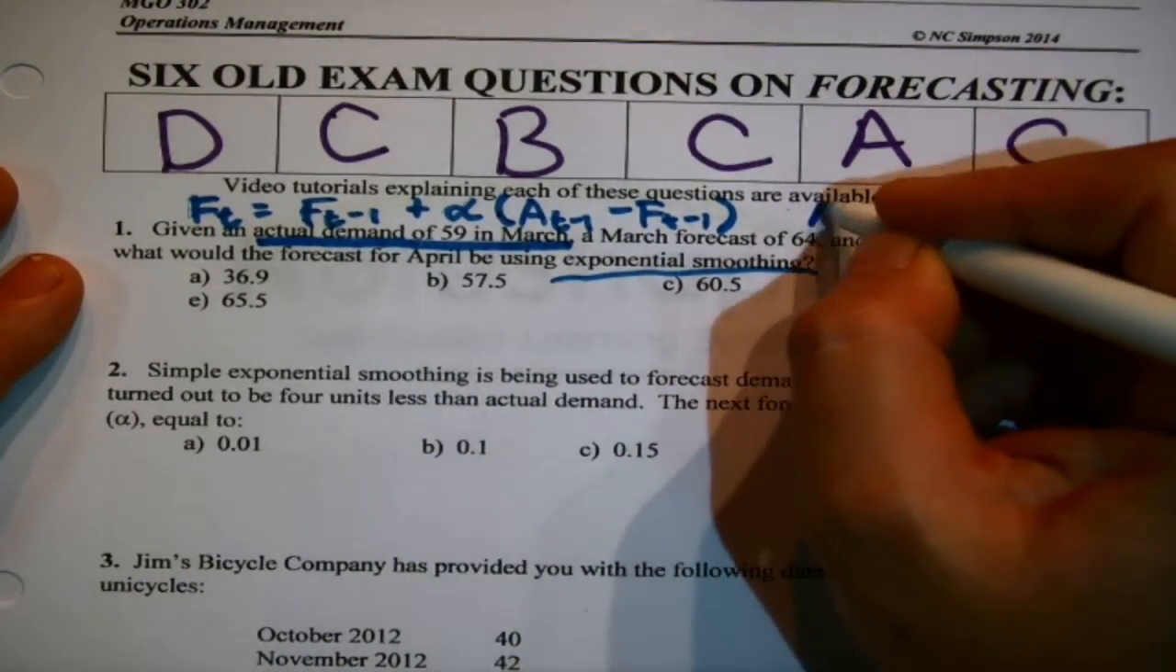Your forecast for a certain period is your forecast for the period before plus alpha times what actually happened the period before minus the forecast for the period before. That's just flat out the formula, like from a formula sheet. Now why did I dot that here? Because given an actual demand of 59 in March, I want to code this information in the sentence in terms of that formula. Now an actual, that's an A. They said March, I'm not going to write like T minus 1 or T, I'm going to write what they told me.